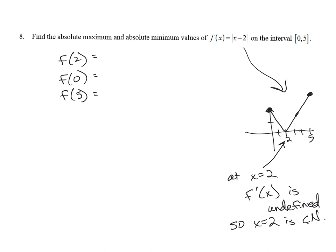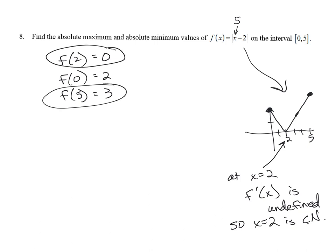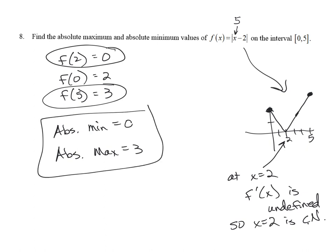f(0) = 2. f(5) = |5 − 2| = 3. f(2) = 0. So our absolute minimum is 0 and our absolute maximum is 3. Those are what the actual heights are — not the X values where they occur.